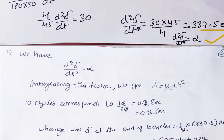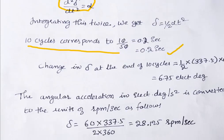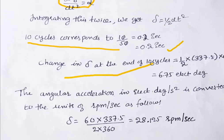Integrating the swing equation twice gives δ = ½ α t². For 10 cycles at 50 Hz, the time t = 10/50 = 0.2 seconds. The change in torque angle at the end of 10 cycles: Δδ = ½ × 337.5 × (0.2)² = 6.75 electrical degrees.